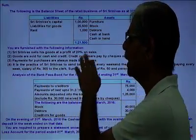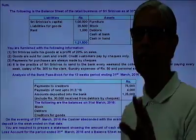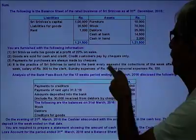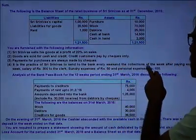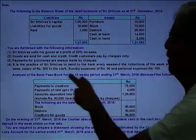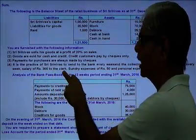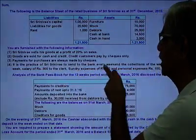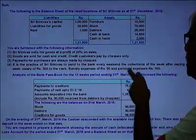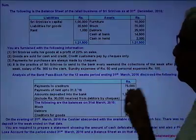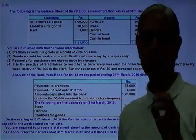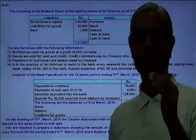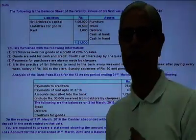All purchases are on credit and payment is made by cheque. It is the practice of Srini Maas to send to bank every weekend the collections of the week, after paying every week: salary of 300 to a clerk, sundry expenses of 50 per week, and personal expenses of 100 per week. These payments are made first out of cash sales proceeds, and the remaining cash is deposited in the bank.